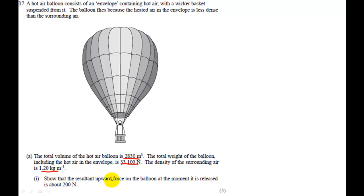And it asks you to show that the resultant force upward on the balloon at the moment it is released is about 200 newtons. So it's talking about resultant forces. So what forces have we got here? We've got up thrust and we've got weight. And the resultant force will just be up thrust minus weight or weight minus up thrust, whichever way around you want to make it.